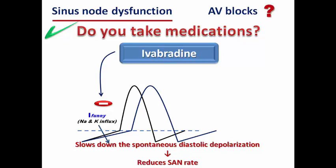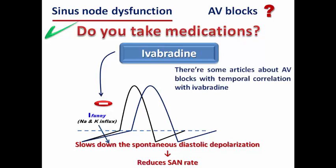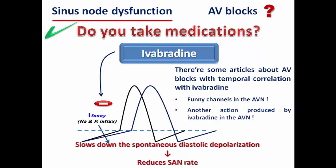There are some articles and case reports about AV blocks with temporal correlation with ivabradine, as we mentioned in our case. Does this mean that there are funny channels in the AV node on which ivabradine acts, or is there another action produced by ivabradine on the AV node that results in AV blocks?